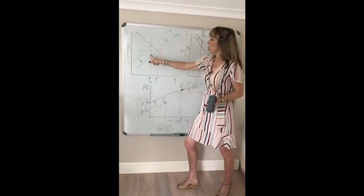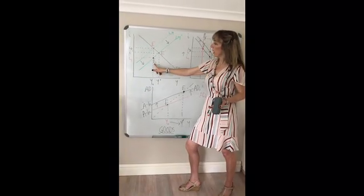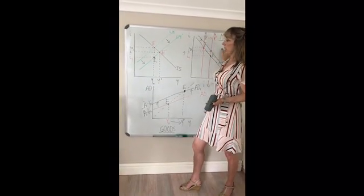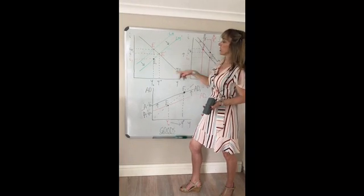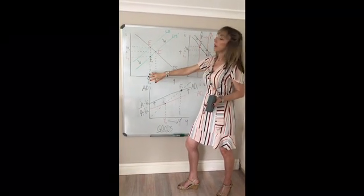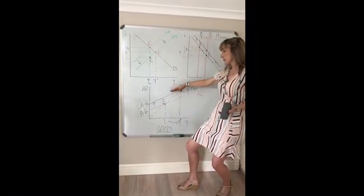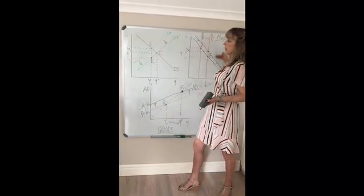We first move at a given level of income, we move from E to E1, because in the money market, portfolio disequilibrium causes interest rates to fall. And then when the interest rate falls, investment rises, income rises, and as income rises, money demand shifts to the right.